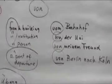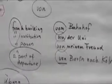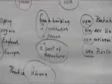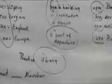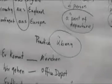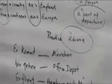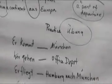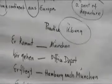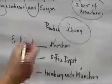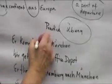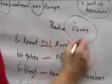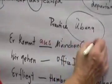Now let's see if you can remember what you learned. How would you say in this sample sentence: er kommt ___ München — he is coming from Munich. If you said aus, it's correct, because it is a city.